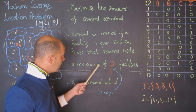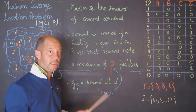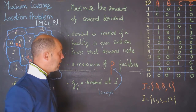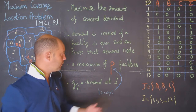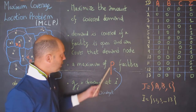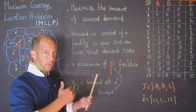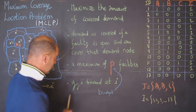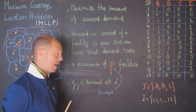Another constraint that we have, which is new compared to before, is that there is a maximum number of P facilities. P is a number that is provided externally by the user, the stakeholder, or whoever. Oftentimes the budget available will determine the value of P. That's also where we do a lot of sensitivity analysis. A new parameter is g sub i, which is the demand at i.